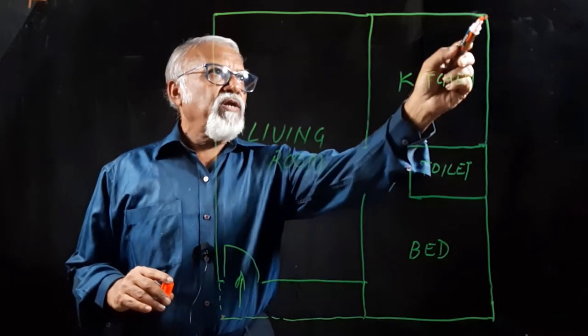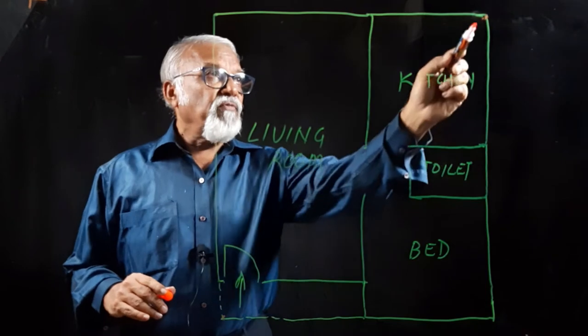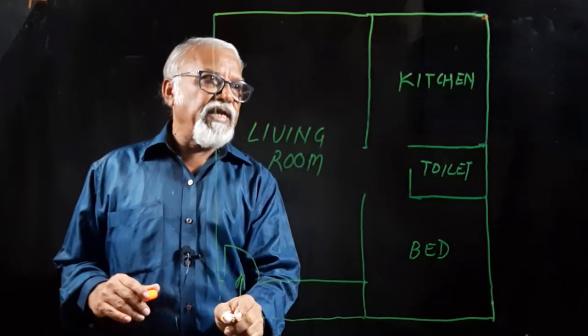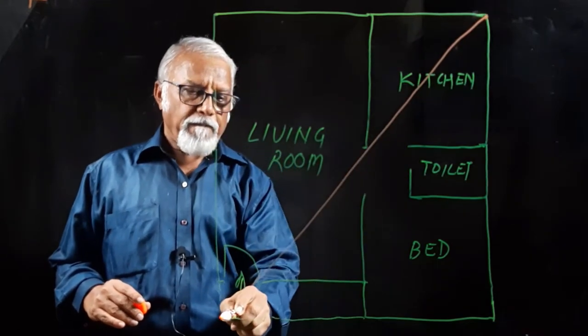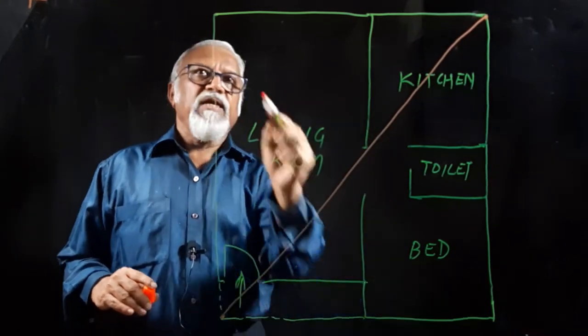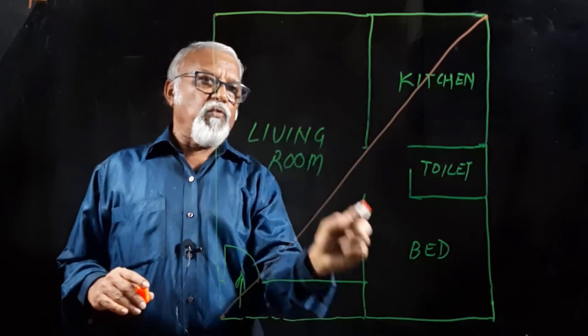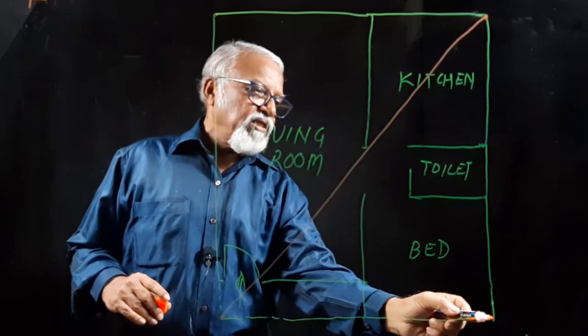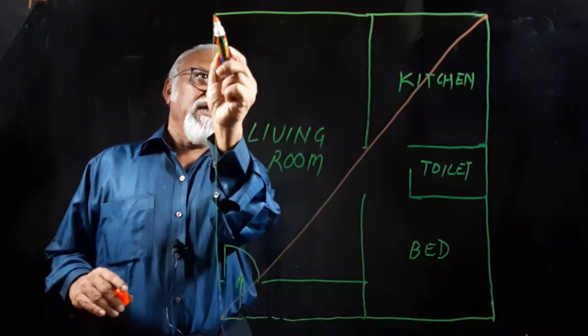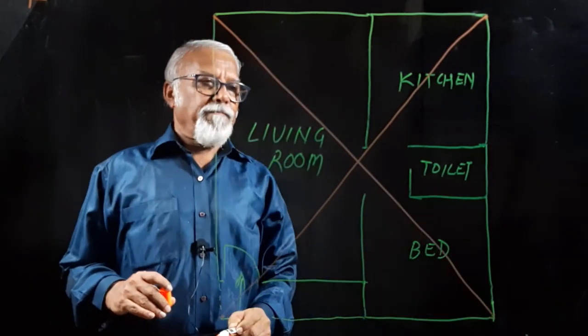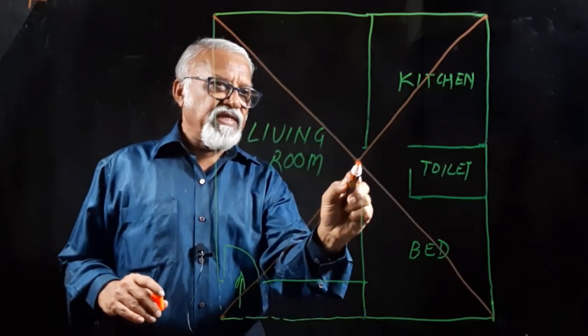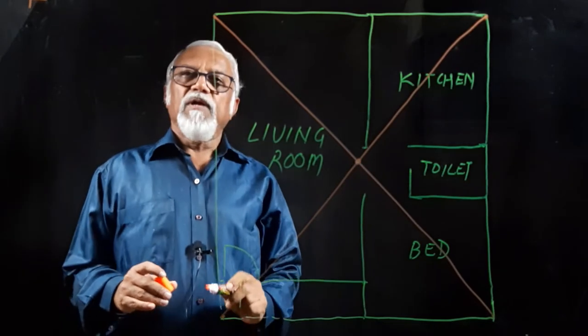You go to one corner of your plan and the second corner diagonally opposite and draw a line. Similarly, from the living room till the bedroom corner, you draw another line. You get the center of your house.